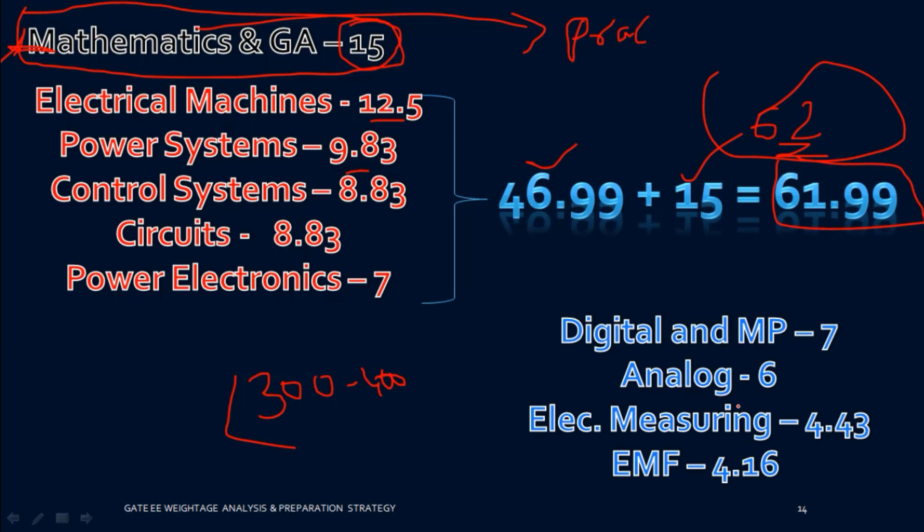If you are targeting a very top rank like top 100, you should have more time — around three months is more than enough to crack rank one. In that case, first concentrate heavily on these six core subjects, then look at the lower-weightage subjects afterward.